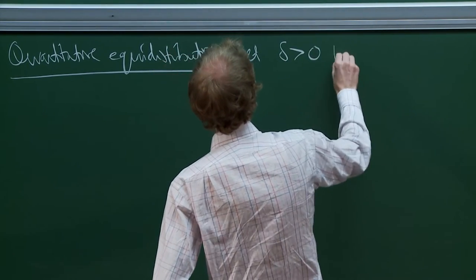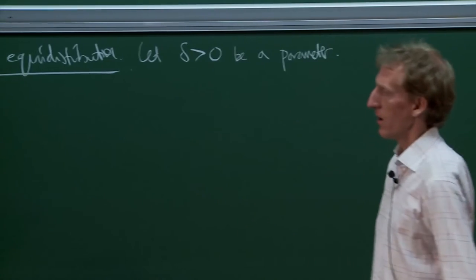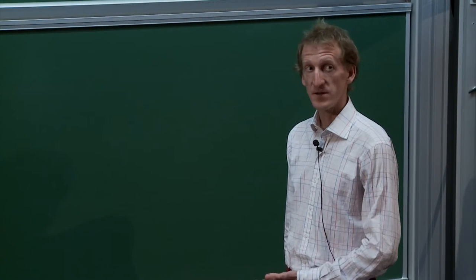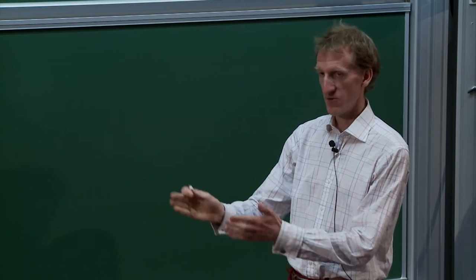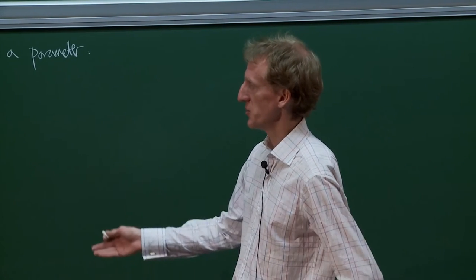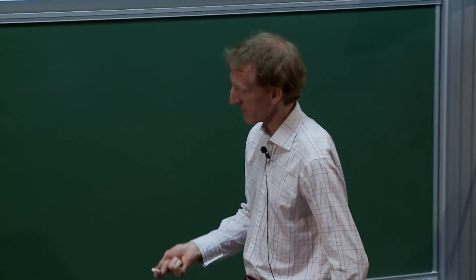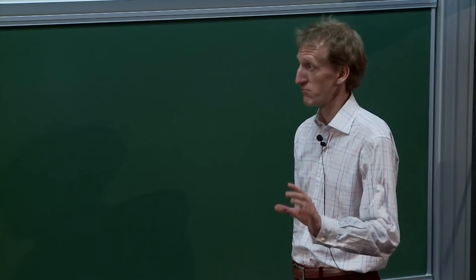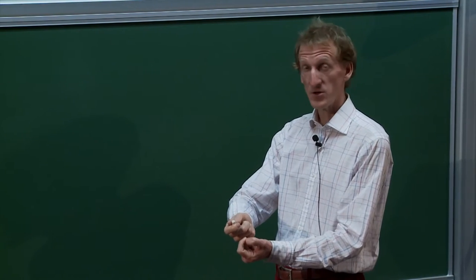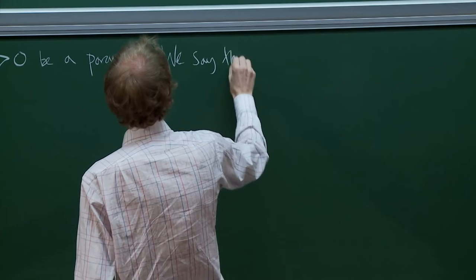For quantitative equidistribution, you have to quantify the notion of 'close'. Let delta >= 0 be a parameter. If somebody asked how to define equidistributed on the circle, the first thing would be: it's a sequence that spends the right proportion of time in each interval.